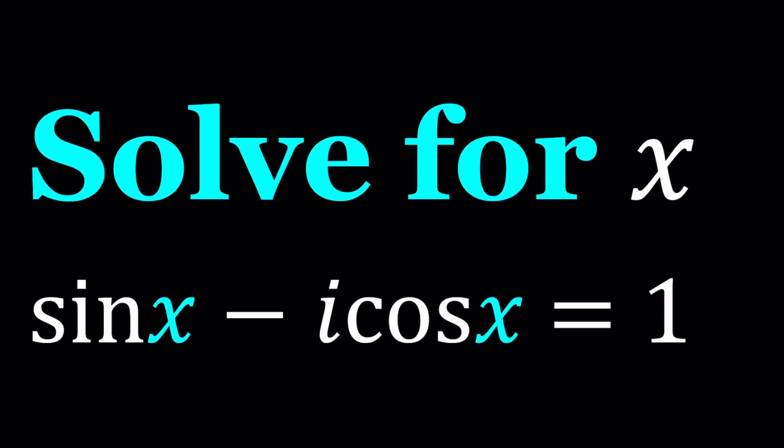Hello everyone. In this video, we're going to be solving an interesting equation. We have sine x minus i cosine x equals 1, and we're going to be solving for x. I'm not exactly sure if I did this problem before. If I did, I apologize. But I'll be presenting three methods. Hopefully, that'll make up for that. So let's start with the first method.